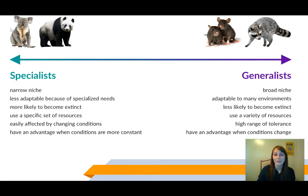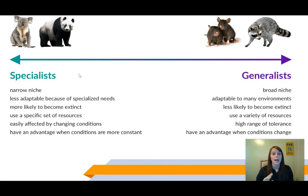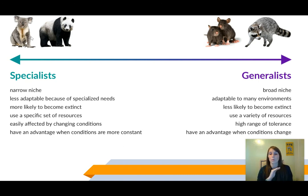A specialist species example is the panda, and another great example is the koala — they can only eat eucalyptus, so they have a very specific niche. Specialists have a narrow niche, are less adaptable, and have very specific resource needs, so changing conditions greatly impact them. However, an additional note is that because they can really thrive in their niche, they have an advantage when conditions are more constant. They have evolved for millions of years to be very good in that one niche, so if it's stable, they're going to be thriving.